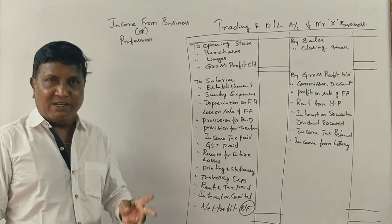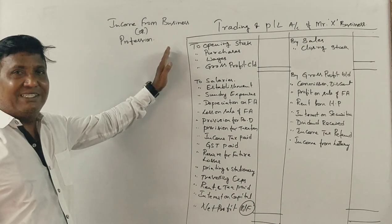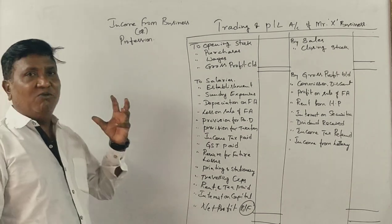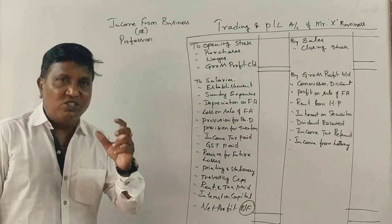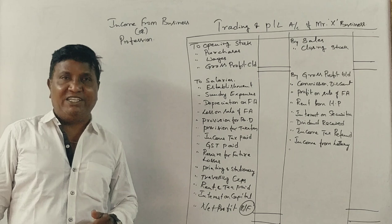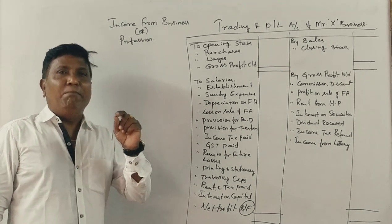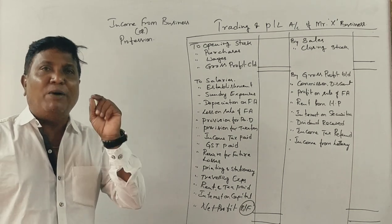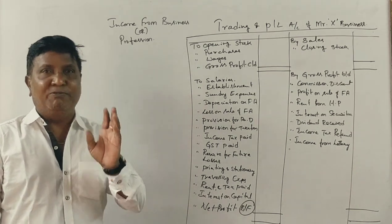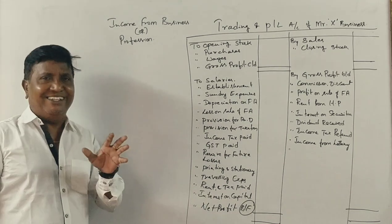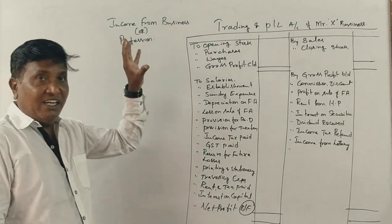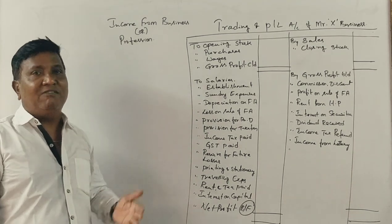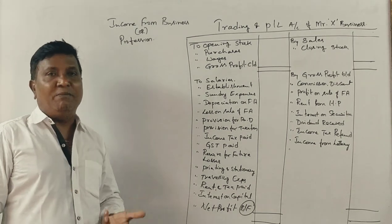What are those three heads of income? The first head is income from business or income from profession. So income from business or profession — in the hands of an individual. A person includes an individual, an HUF, a partnership firm, a joint stock company, an association of persons, and an artificial juridical person.